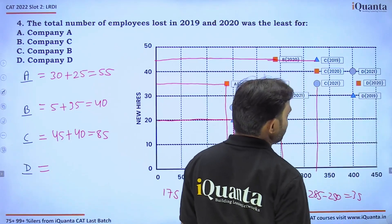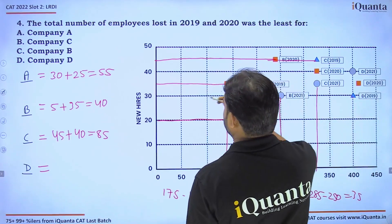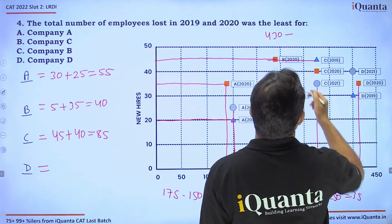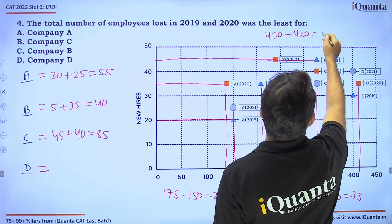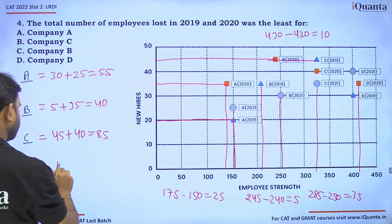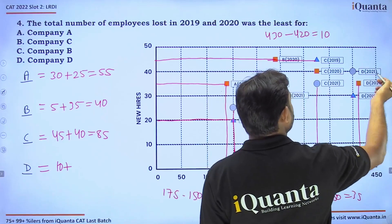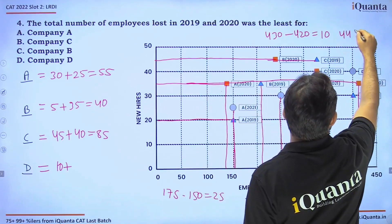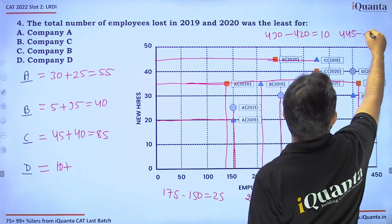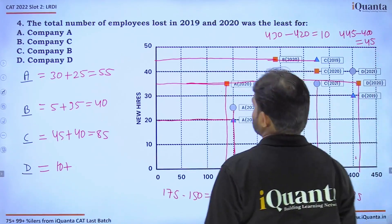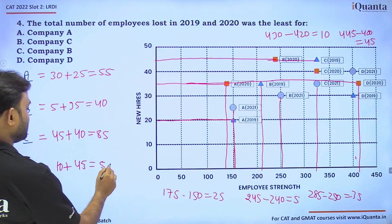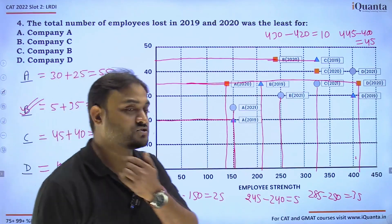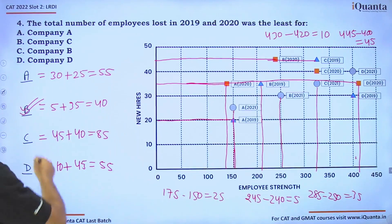For company D in 2019, 400 plus 30 gives 430, and in 2020 there are 420 employees, so 10 left. In 2020, 420 plus 35 gives 455, but in 2021 there are 400 employees, so 45 left — totaling 55 for D. Comparing all: A=55, B=40, C=85, D=55. The least is company B.